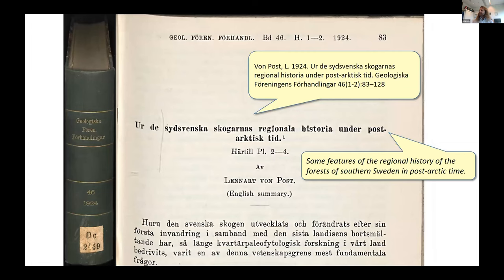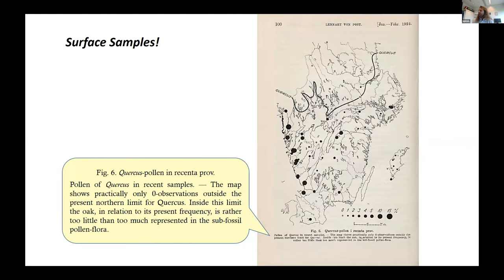The next publication Eric highlighted is von Post's 1924 paper on some features of the regional history of forests of southern Sweden. In it, he had a map of surface samples. Using oak as an example, he compared surface samples to the distribution of oak, noting very little oak pollen in sites beyond the distribution limit of the tree. Inside the limit, oak in relation to its present frequency is rather too little than too much represented — so he already looked at representation factors.